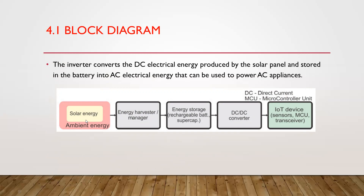The block diagram of the solar energy harvesting system consists of ambient solar energy input which feeds into an energy harvesting manager, then into energy storage, and then through a DC to DC converter which provides power to the IoT device.